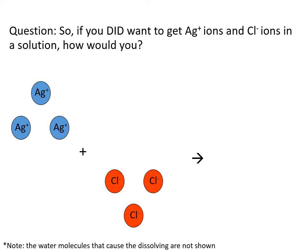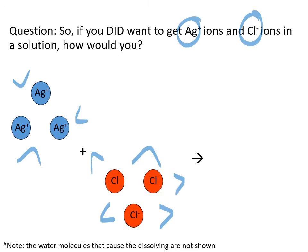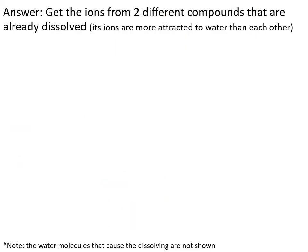So if you did want to get silver ions and chloride ions into a solution, how would you do it? You know they won't dissolve — you can't just take silver chloride and put it into water because it doesn't want to dissolve. The answer is that you would need two different compounds dissolved into water separately to begin with, and then when you mix them together, you would get a precipitate.